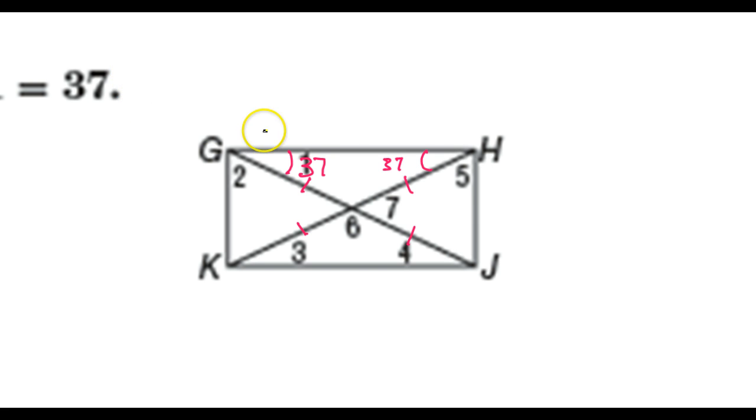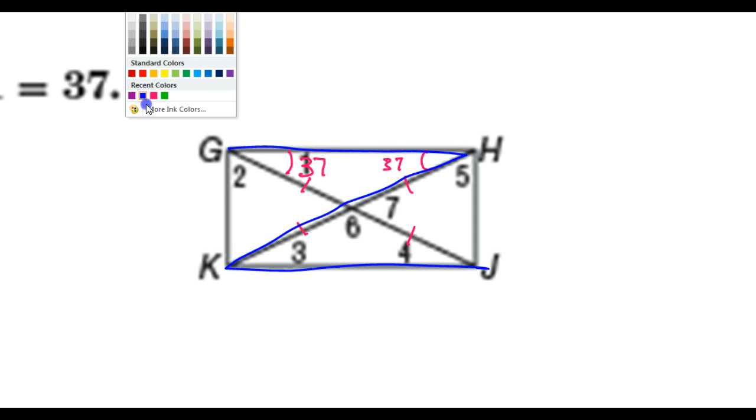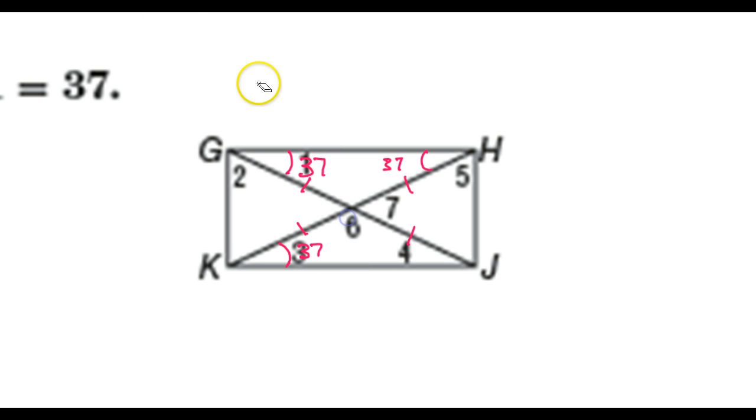But if you see the Z with me for a moment, see the Z happening like so. You have parallel lines cut by a transversal. Now, your alternate interior angles will be congruent. So that's going to jump down here and cause this angle to be congruent to this angle, because alternate interior angles. So this is also going to be 37 for that reason.